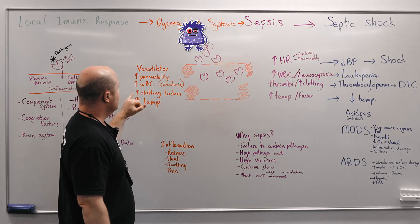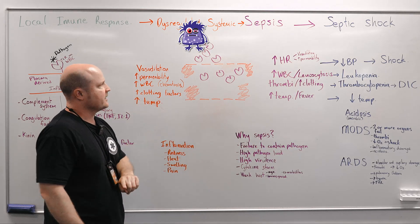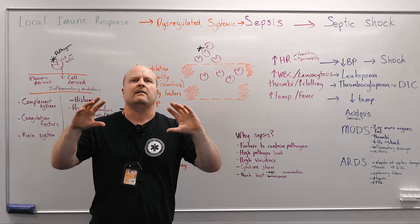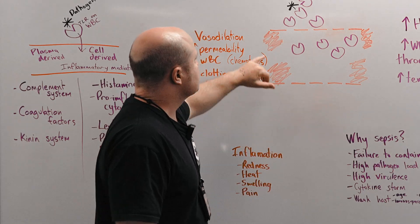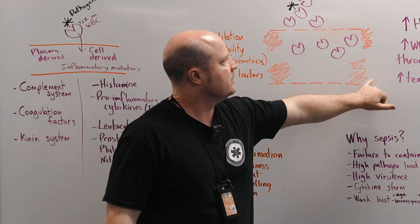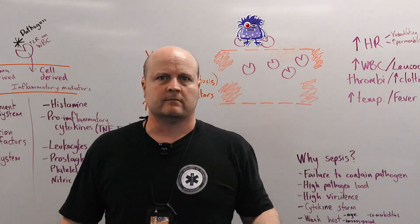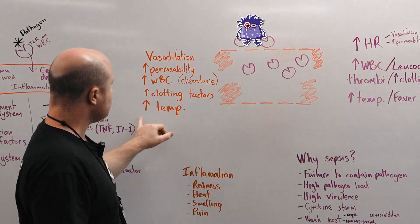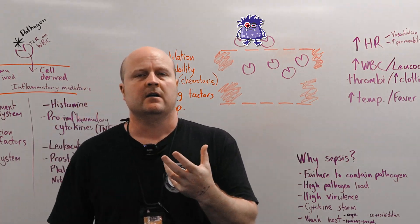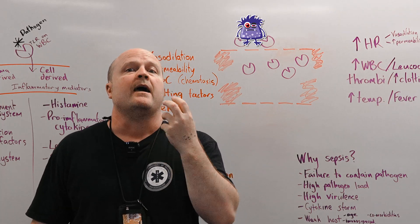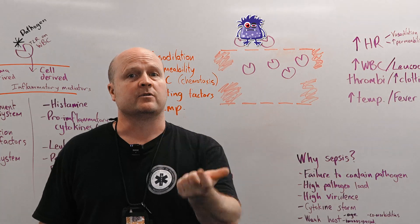Chemotaxis. Then with a local inflammatory response we get increased clotting factors so this means we're more likely to form clots. Again this is a good thing because if we form clots around where our pathogen is it helps to localize it and stop it from spreading. What else? So increased temperature. So the increased temperature it's going to increase our metabolism to try to help defeat the pathogen and it's also going to be harmful to the pathogen.